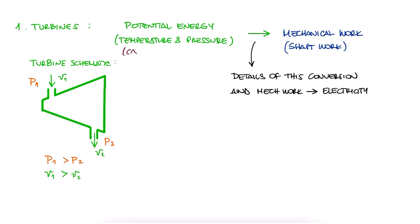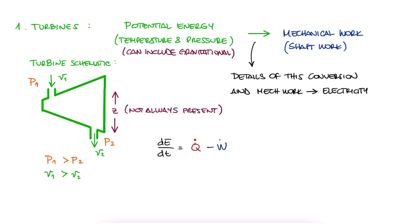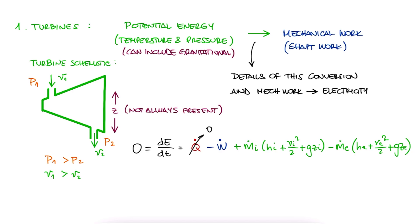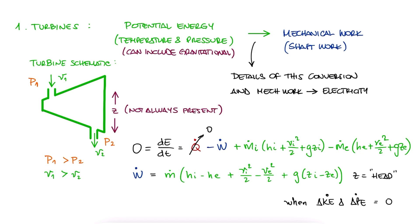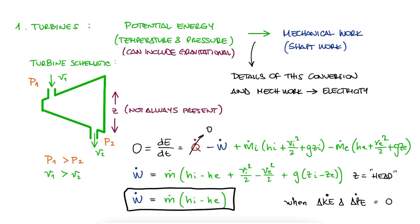Turbines can also take into consideration the change in gravitational potential energy, for example if the turbine is located at a dam. This is the reason for usually drawing turbines with the inlet at a higher elevation than the exit. Taking all of this into consideration, and like the other devices we've seen so far where the change of energy over time is zero, and adding that ideal turbines are very well insulated and therefore the heat transfer rate is zero, the conservation of energy equation reduces to work rate W dot equal to mass flow rate times the change in enthalpy, speed, and height. In cases where changes in speed and head are negligible, this expression becomes just mass flow rate times the change in enthalpy.